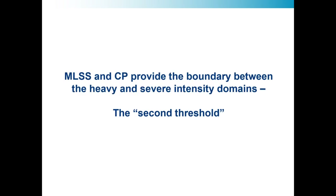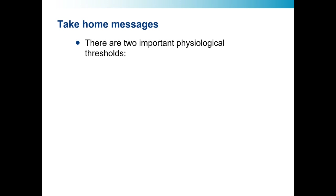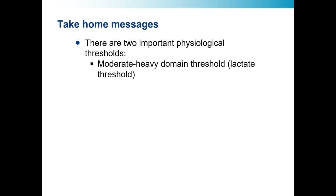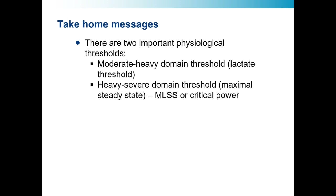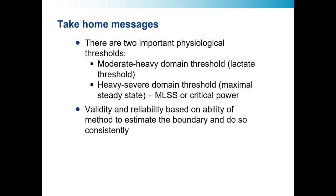The maximal lactate steady state and critical power provide the boundary between the heavy and severe domains — that is your second threshold. So the two take-home messages: there are two important physiological thresholds — first, the threshold between moderate and heavy domains, usually the lactate threshold and its equivalents; and second, the heavy-severe intensity domain threshold, identified as the maximal lactate steady state or critical power. I shouldn't neglect to mention the functional threshold power — so there, I've just mentioned it. The validity and reliability of these measures is based on their ability to estimate the boundary of interest consistently.